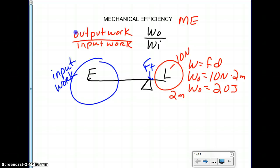Once we have figured out the ratio between the output and input work, we need to multiply that by 100 so that our answer is going to be in a percentage form. So we already know that our output work is 20 joules. We'll put that on the top of our fraction.